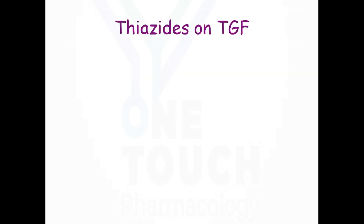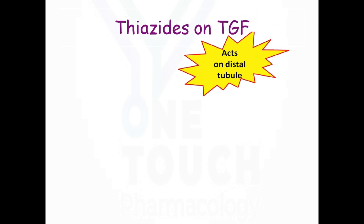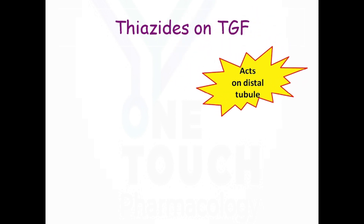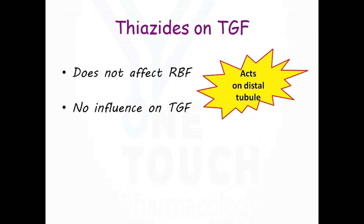Since thiazide-like diuretics act on the distal tubule, they have no effect on renal blood flow or the tubuloglomerular feedback.